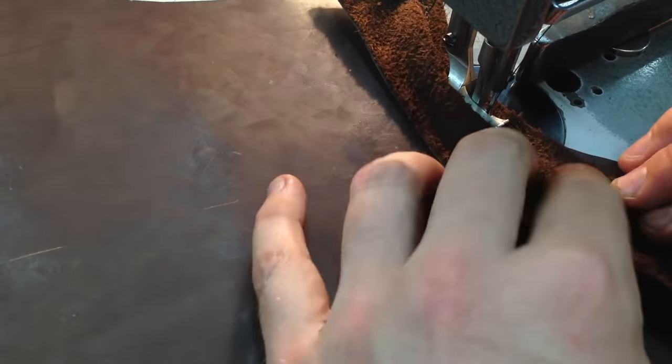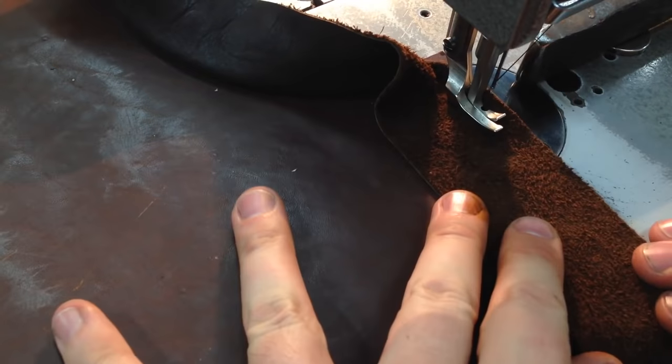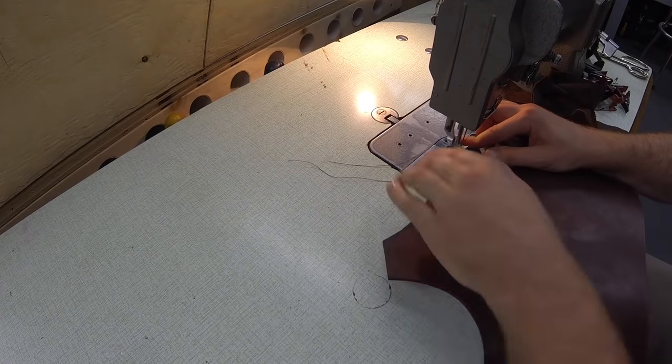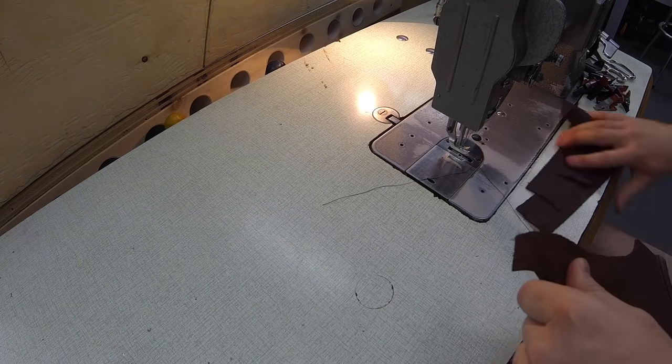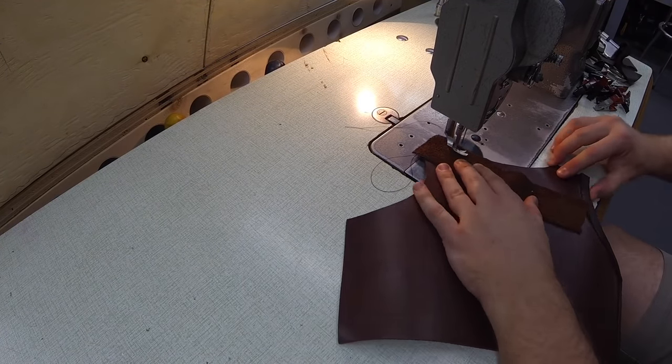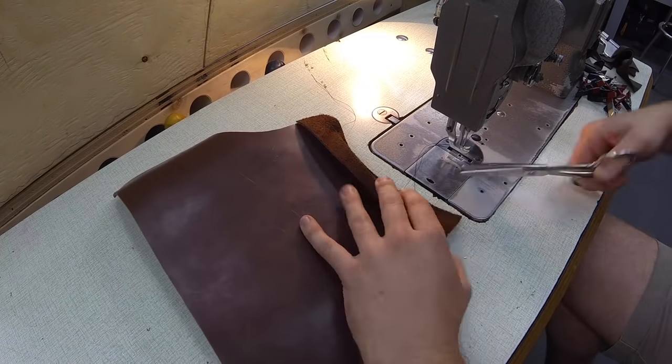Basically I'm going to create a bound edge on all of the places where it might touch the actress, because in this particular case the actress is not going to be wearing much underneath this. She'll probably have a little sports bra underneath to protect her, but other than that it's going to look like she's bare skinned underneath this breastplate.